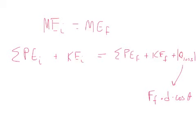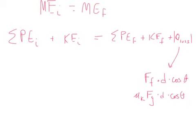Force of friction is really mu times FN. FN and FG are balanced when moving horizontally, so force of friction becomes mu-k times FG, which equals mu-k times mg. So Q_loss equals mu-k times mg times d. Remember: if you have friction and you're using the force of friction to calculate Q_loss, this applies to horizontal motion only.